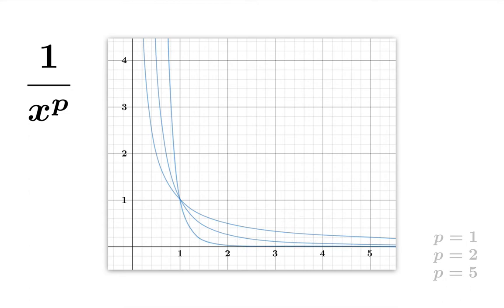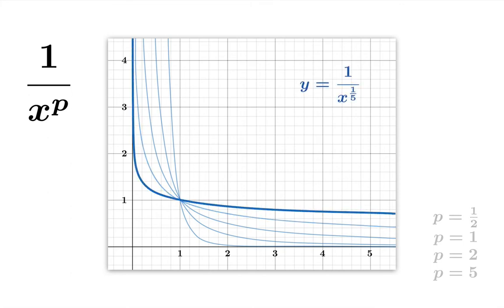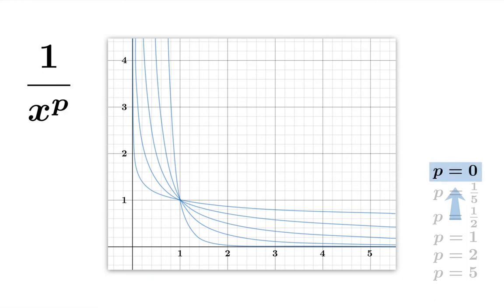But let's go in the other direction. Let's take p equals one half — so this is 1 over the square root of x. Here would be the case p equals 1 fifth, that is 1 over x to the 1 fifth power. We observe that as p approaches 0, these graphs seem to be pushing upwards to the right of the argument 1.